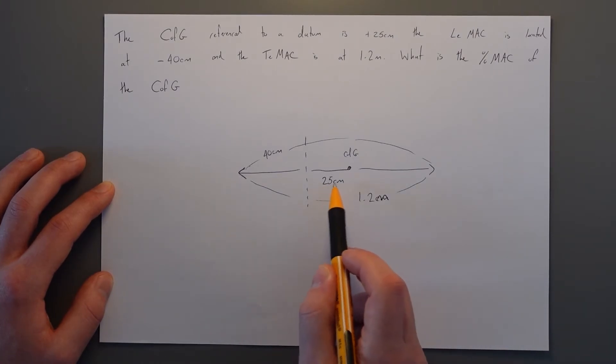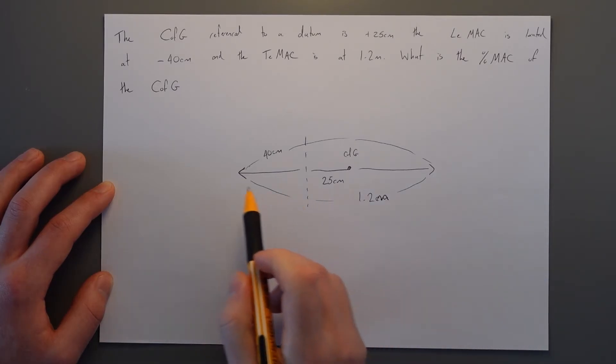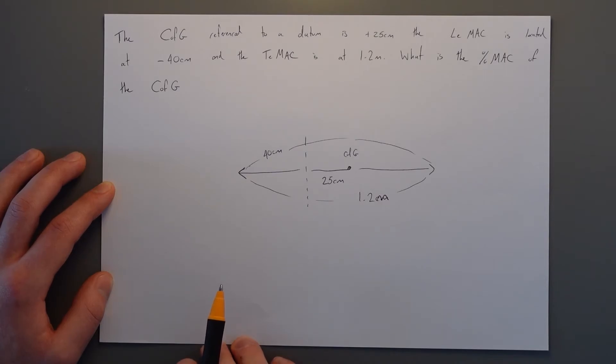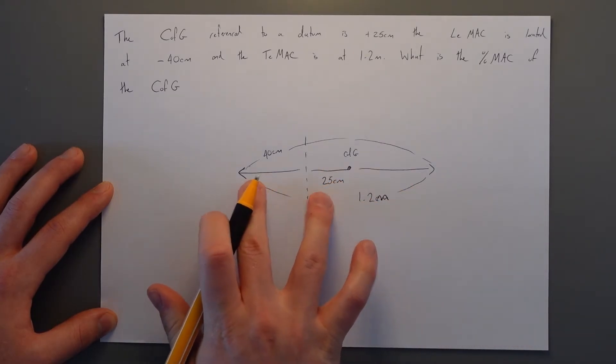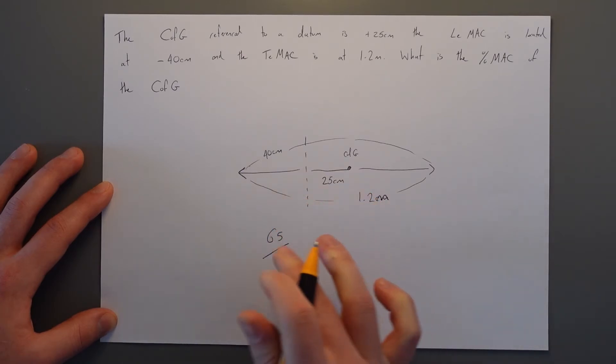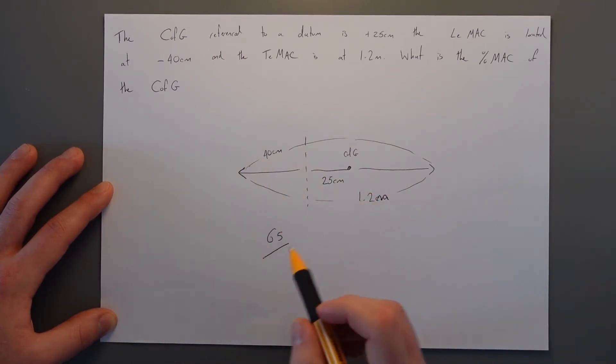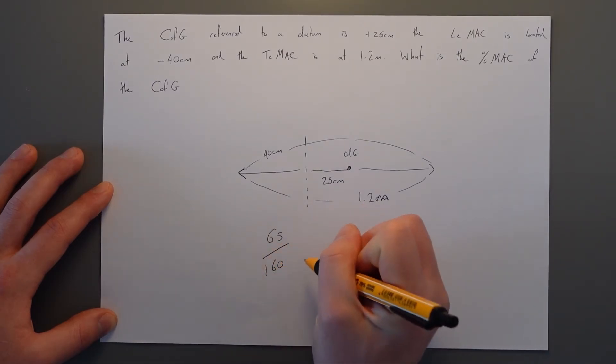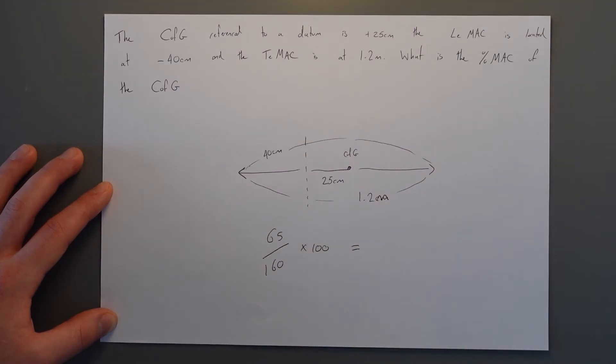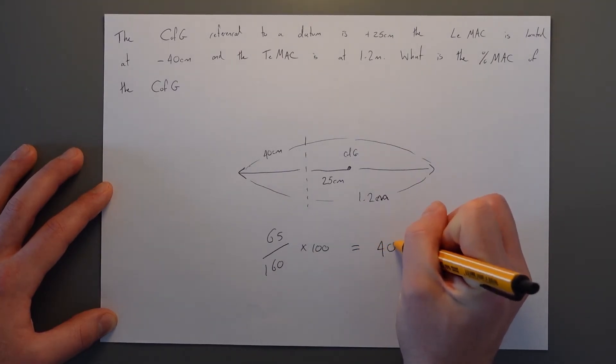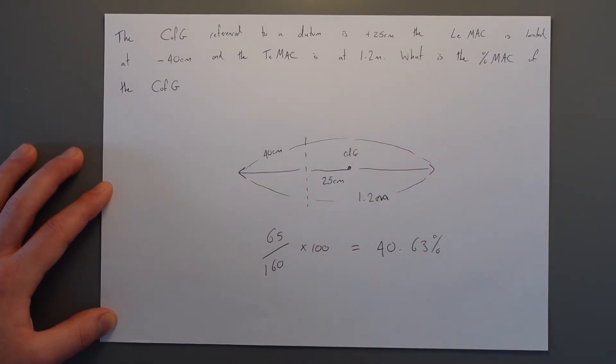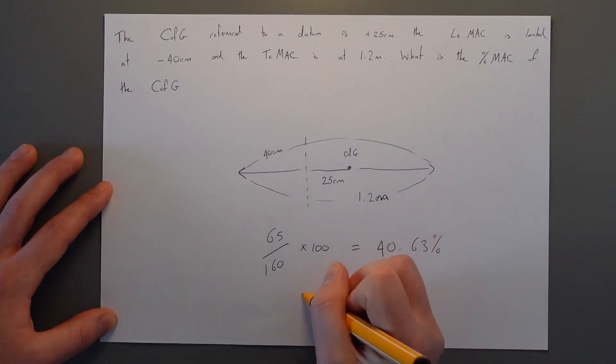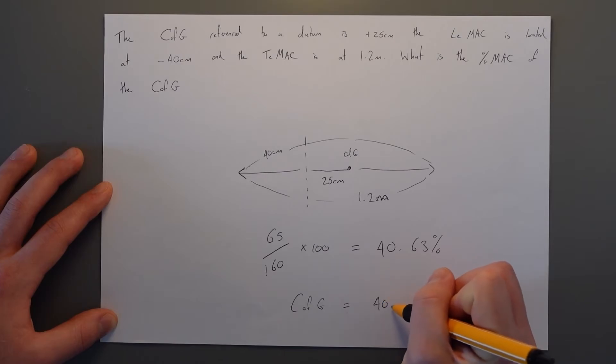So this is very simple. We just take the smaller number which is how far back along we are, divide it by the bigger number and we come up with our answer. So in this case our bigger number is 65 because we're 65 back from the start. We're going to then divide by the total which is 1.6 or 160 centimetres. And then we're going to multiply that by 100 and come up with our answer which is 40.63%, 41% ish. So our C of G is equal to 40% MAC.